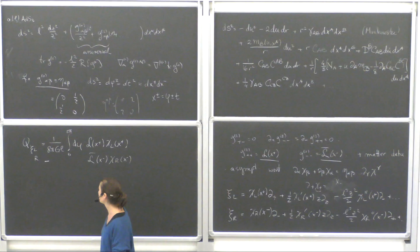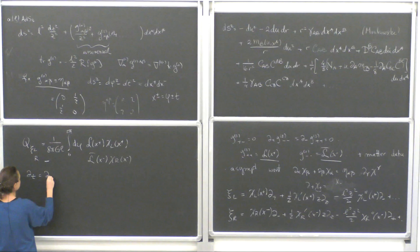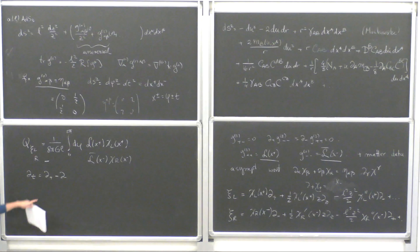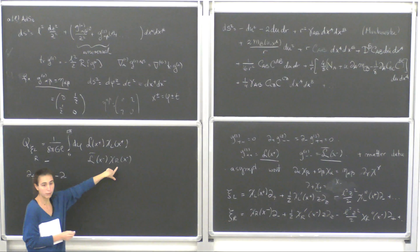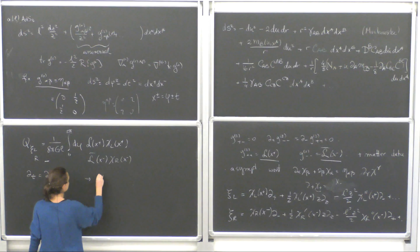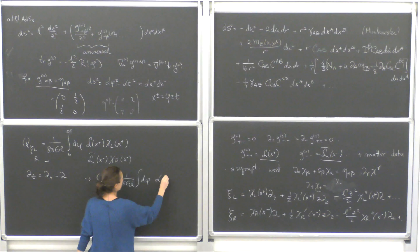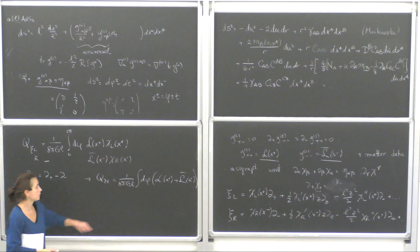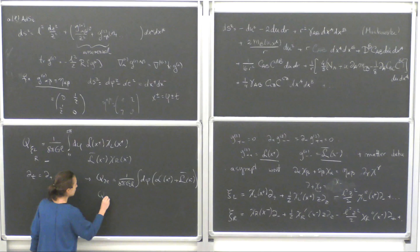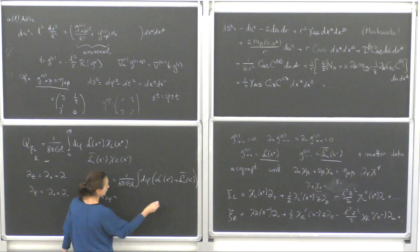For example, to compute the energy Q[∂_t]: since ∂_t = ∂+ − ∂−, you set χ_left = 1 and χ_right = −1, giving Q[∂_t] = (1/8πGl) ∫ dφ (L(x+) + L̄(x−)). For angular momentum Q[∂_φ]: since ∂_φ = ∂+ + ∂−, you get the same thing but with a relative minus sign between L and L̄.